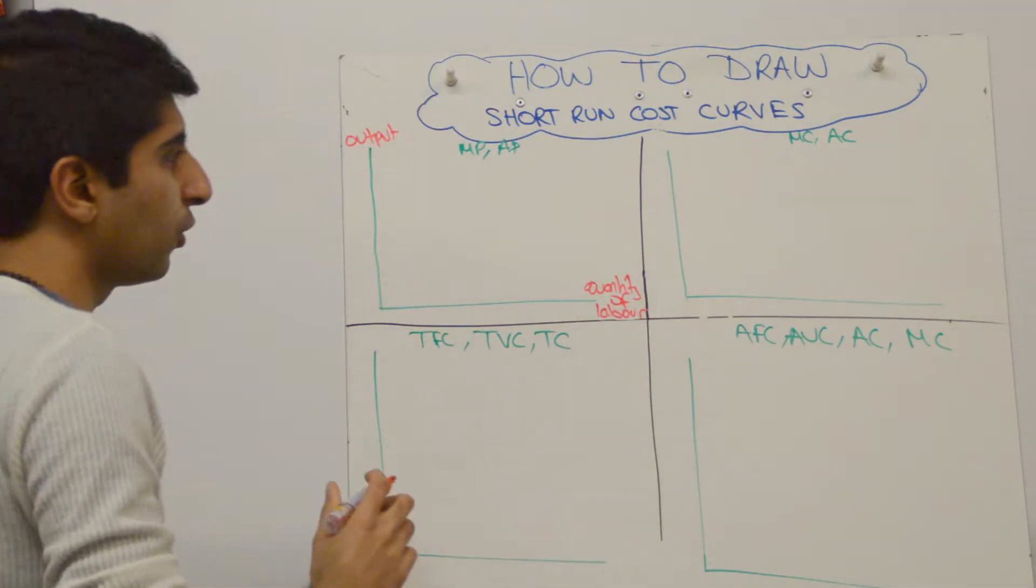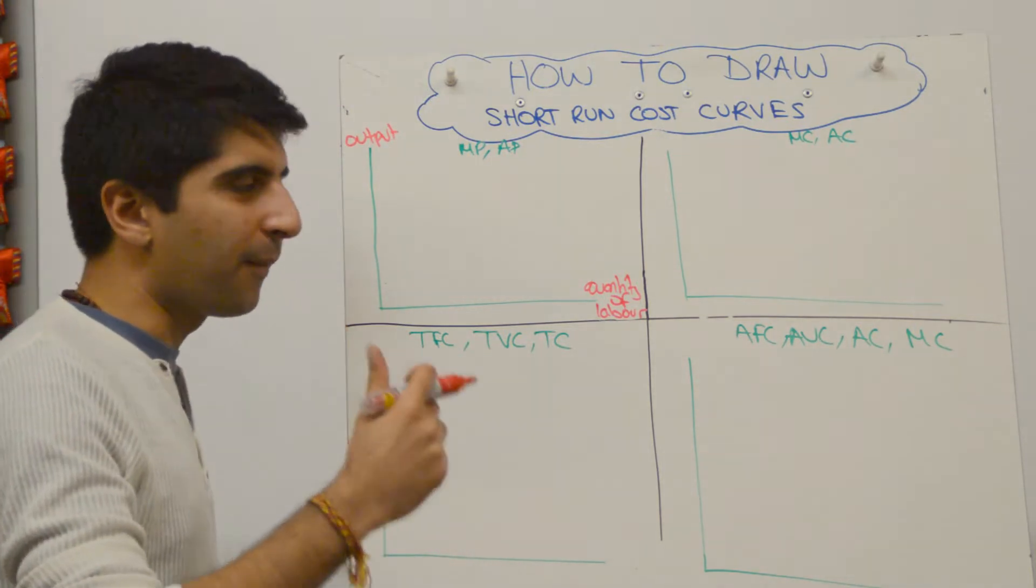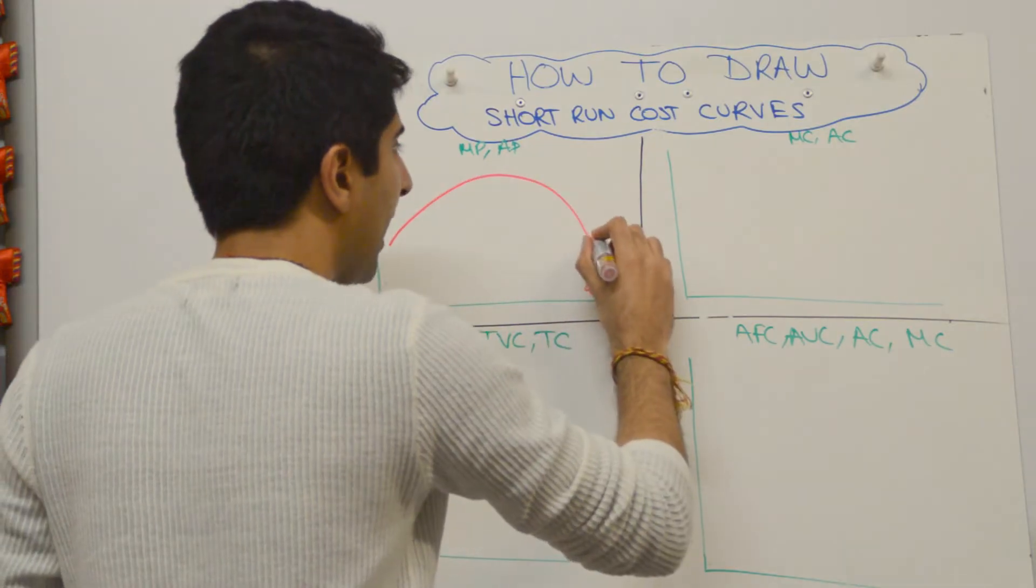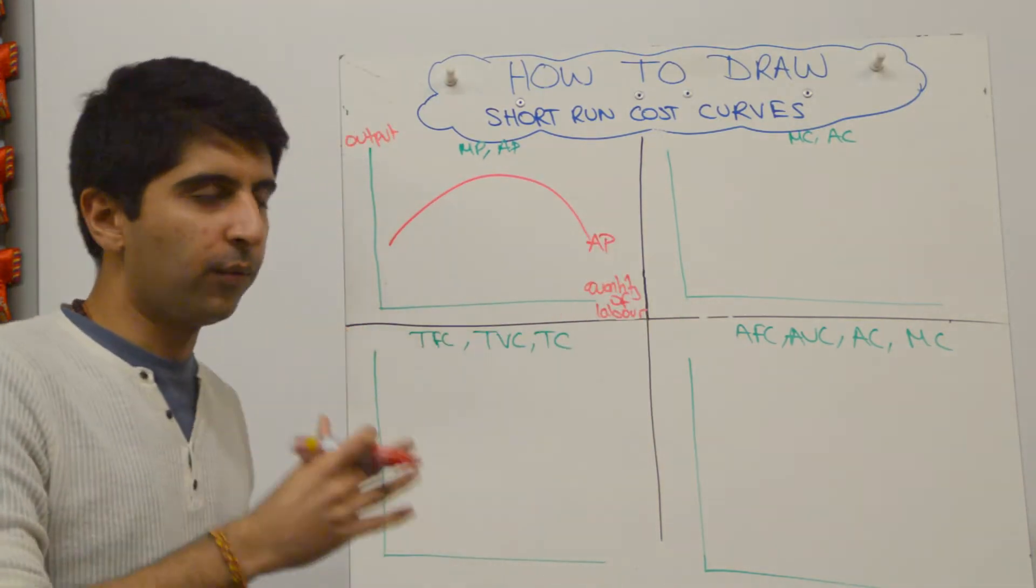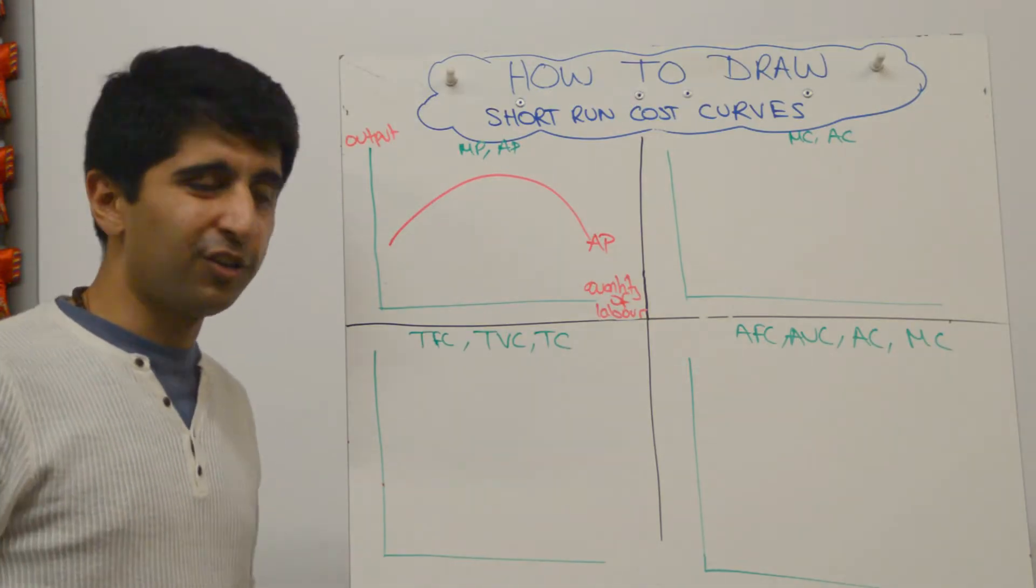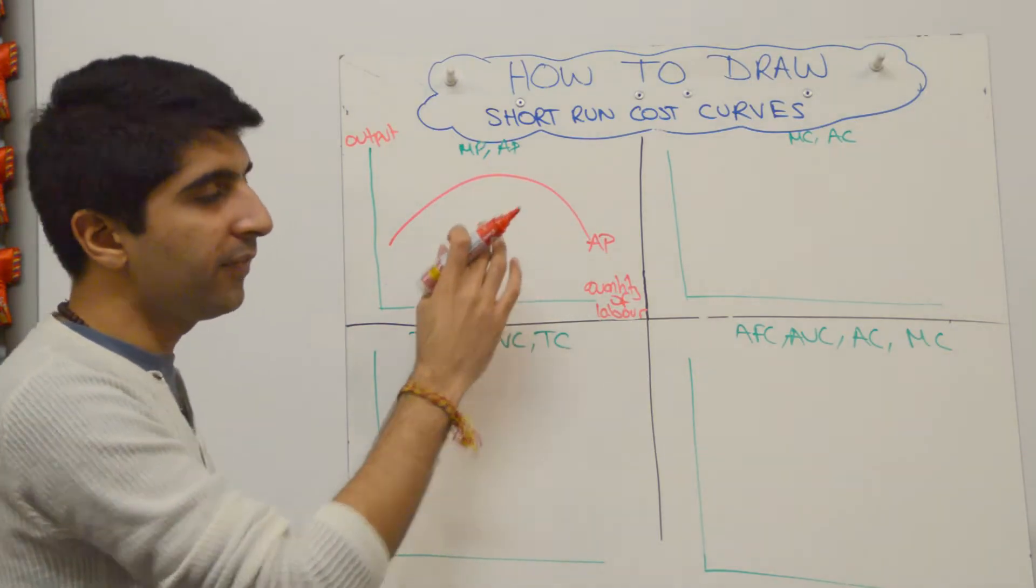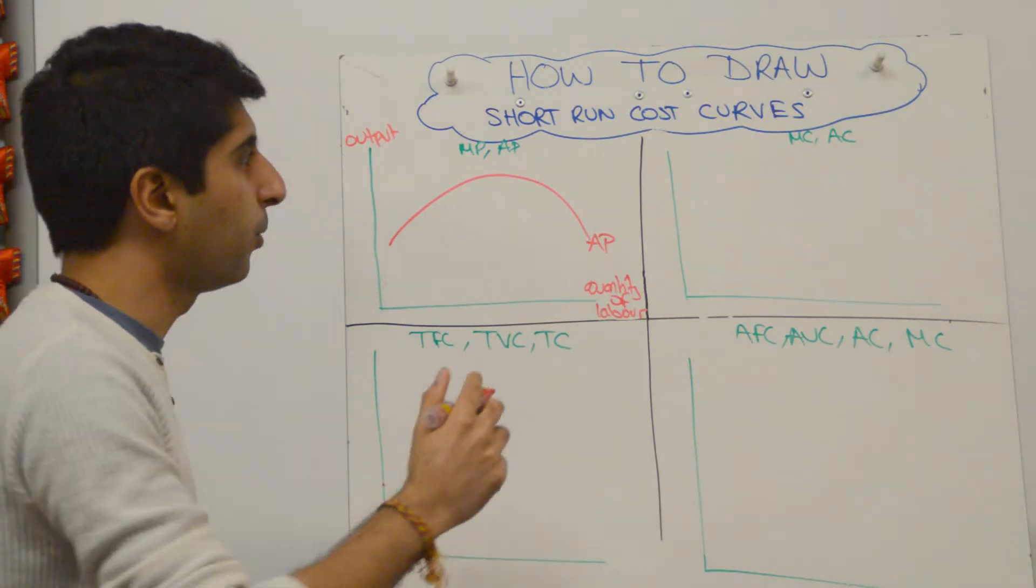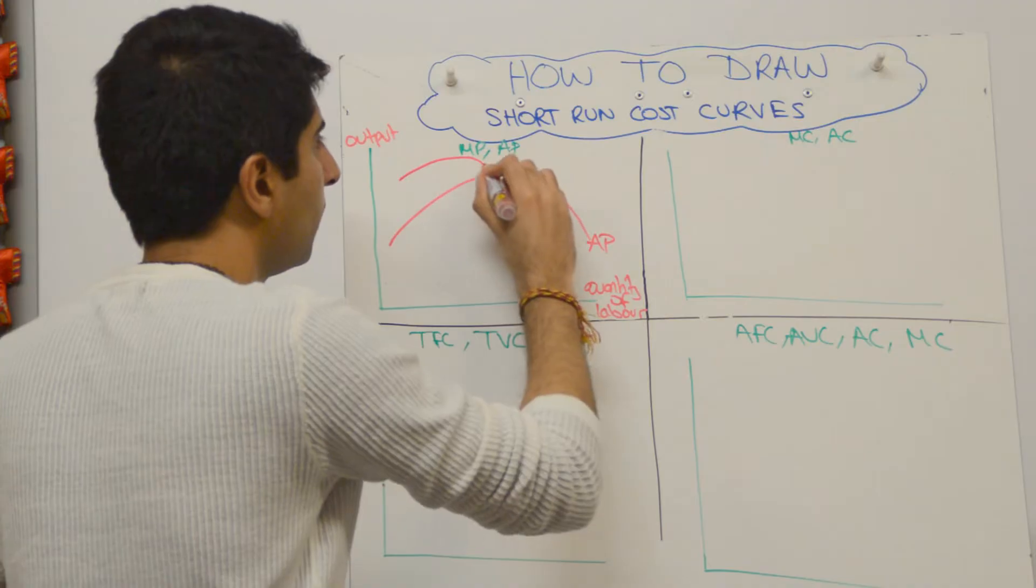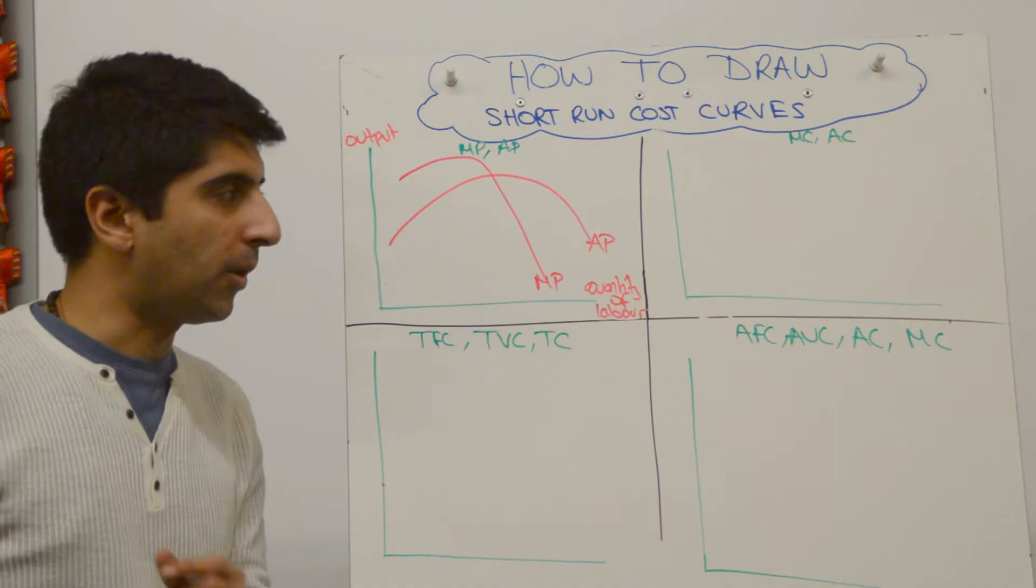All right, and what we draw first—it's like a frown, okay, unhappy face, think of it that way—as your average product. So unhappy face, a frown, is your average product. And marginal product is like an inverted marginal cost, okay, so it goes up initially and then comes down. But it must cut the average product curve at its highest point. So do that next, like that, cutting AP at its highest point.